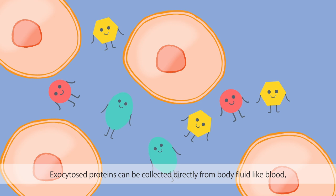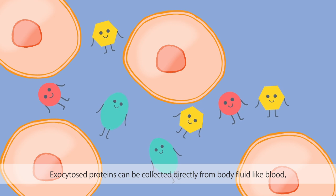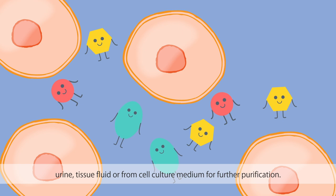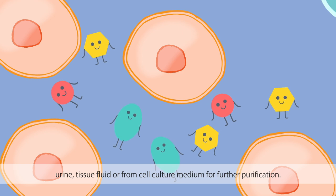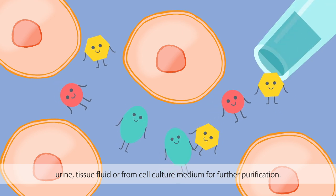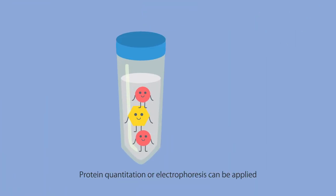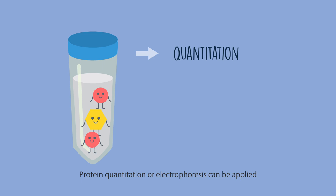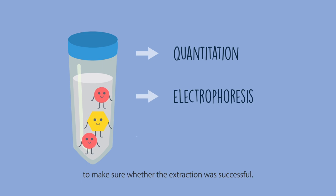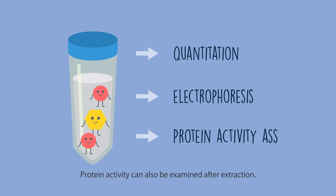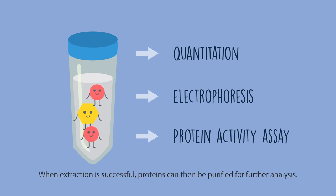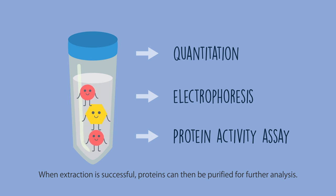Exocytosed proteins can be collected directly from body fluid, like blood, urine, or tissue fluid, or from cell culture medium for further purification. Protein quantitation or electrophoresis can be applied to confirm whether the extraction was successful. Protein activity can also be examined after extraction. When extraction is successful, proteins can then be purified for further analysis.